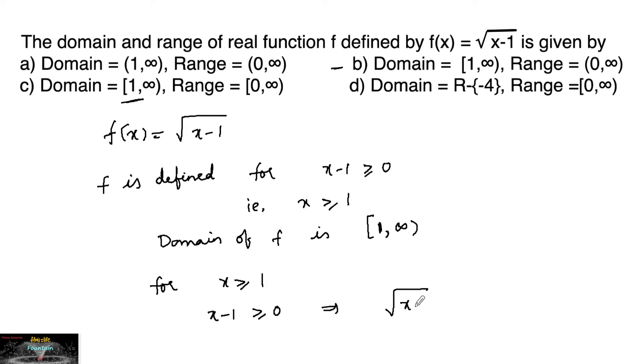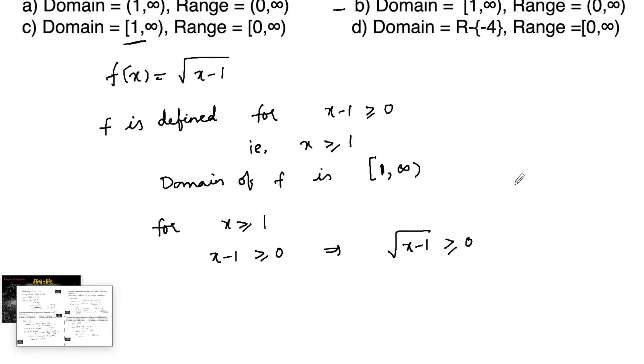This implies that √(x-1) ≥ 0 because all values are positive and including 0, the square root must be greater than or equals to 0. So we can say f(x) = √(x-1) ≥ 0.